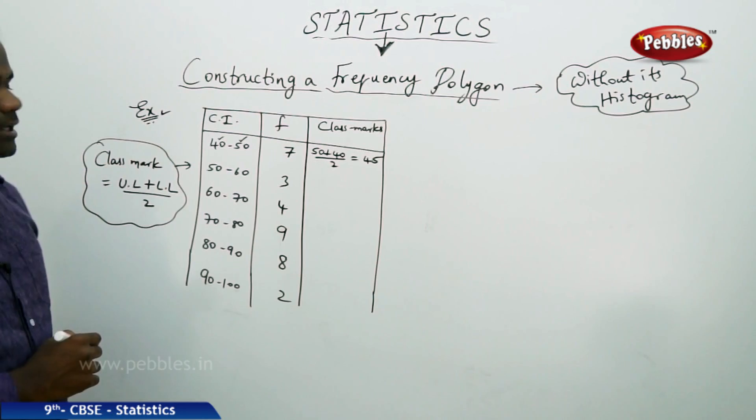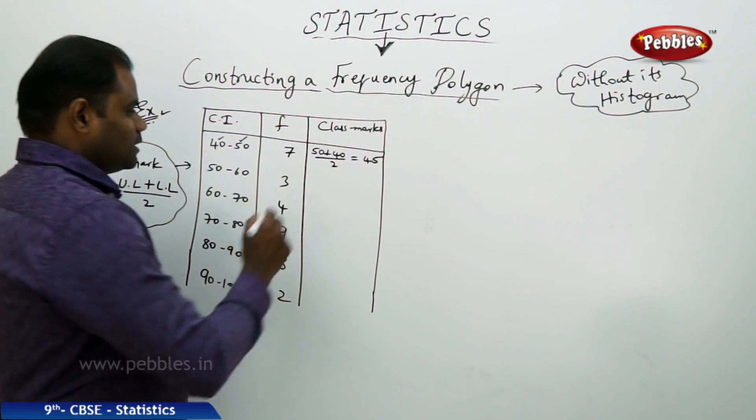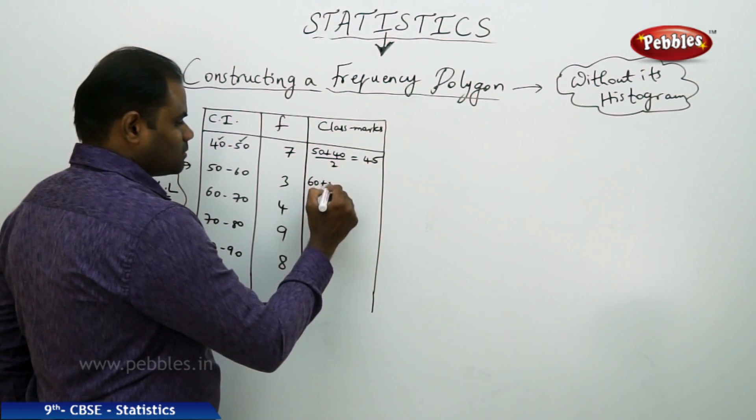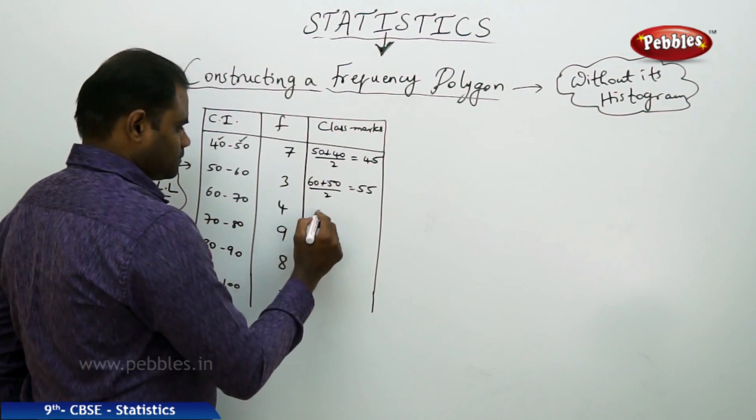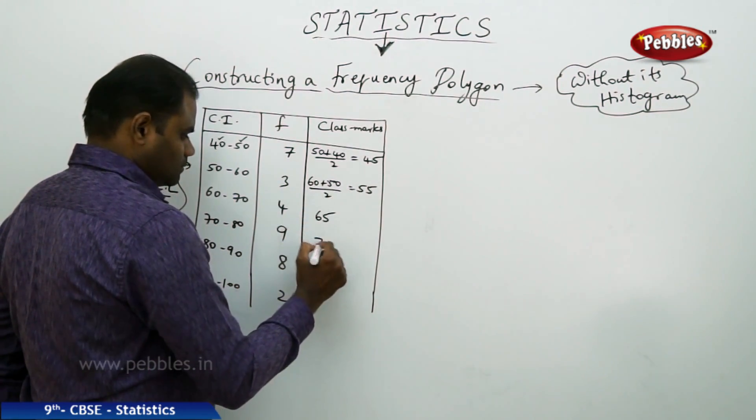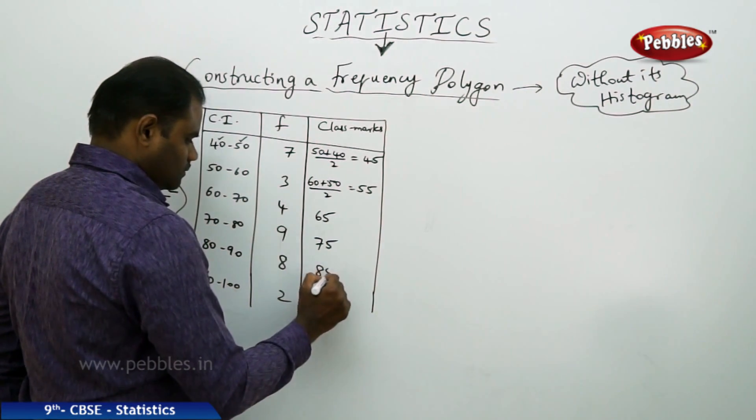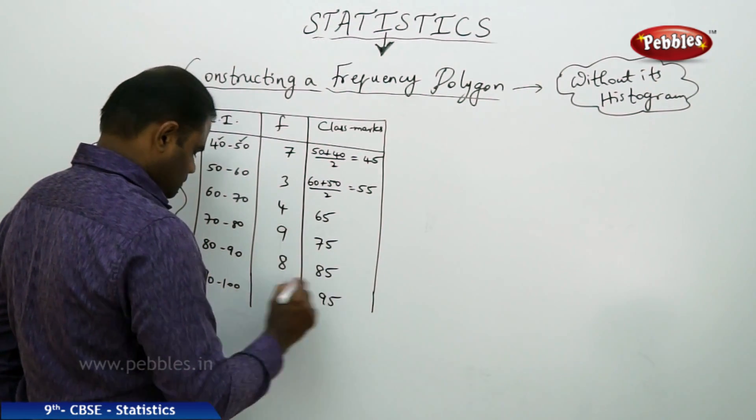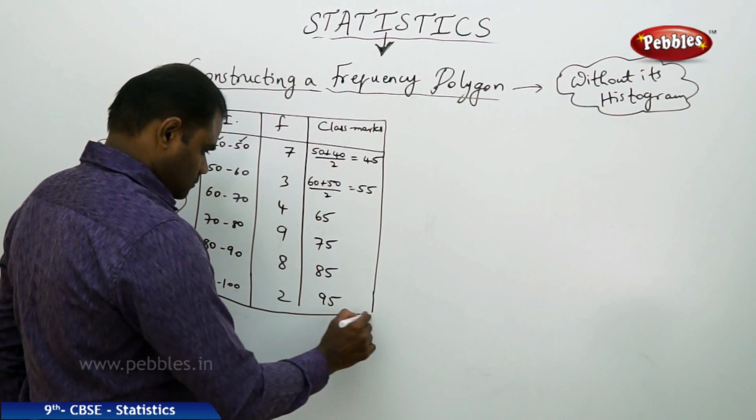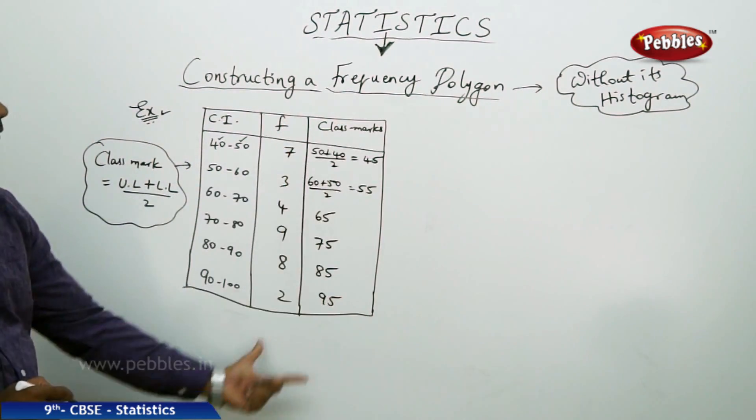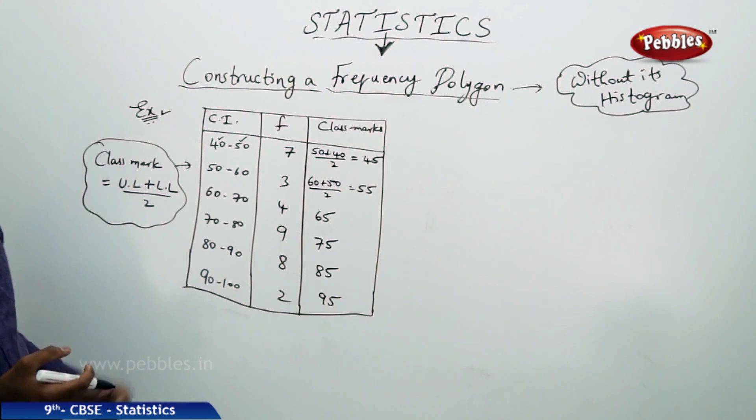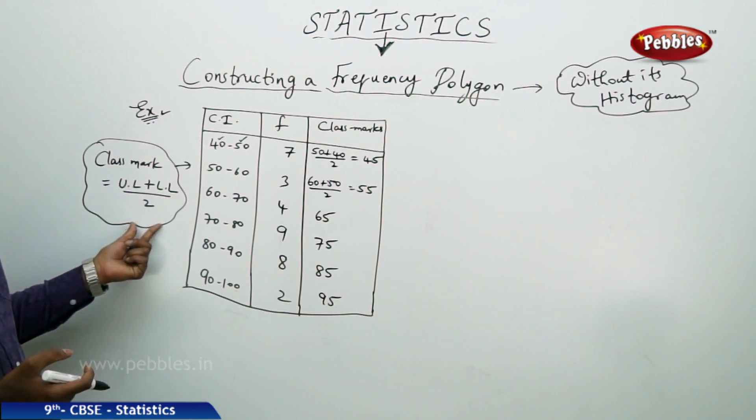So upper limit plus lower limit by 2 which gives me 55. The class mark for this class interval is 45. And the class mark for this class interval is upper limit plus lower limit by 2 which is 55, 65, 75, 85, 95. This is how I get the class marks, upper limit plus lower limit by 2.